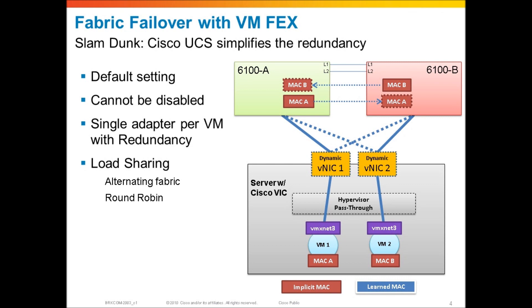Let's get back to fabric failover and implementations with VMware. Using fabric failover with VMware vSwitches and Nexus 1000V may not be the best thing to do, but there is a case with VMware implementations where fabric failover absolutely is a slam dunk — in fact, it's enabled and on by default when you do it this way. This implementation is with VMFex, otherwise called in the past hardware vNIC. This is where you're providing a hypervisor pass-through switching on the VMware host from the virtual machine passing through the hypervisor, and the virtual machine is logically connected with a virtual cable all the way up to the 6100, just like we've been discussing with physical servers and their virtual adapters.